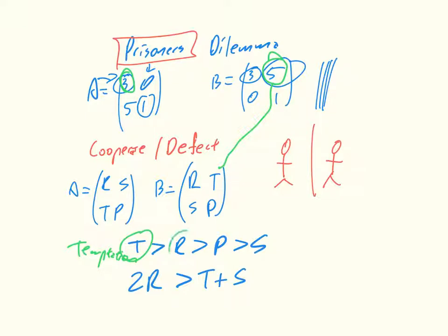The reward, this is the reward, and that's just the reward for cooperating, so that we both get a three. The punishment, so this is the punishment here, is the value of both of us defecting and us being punished.